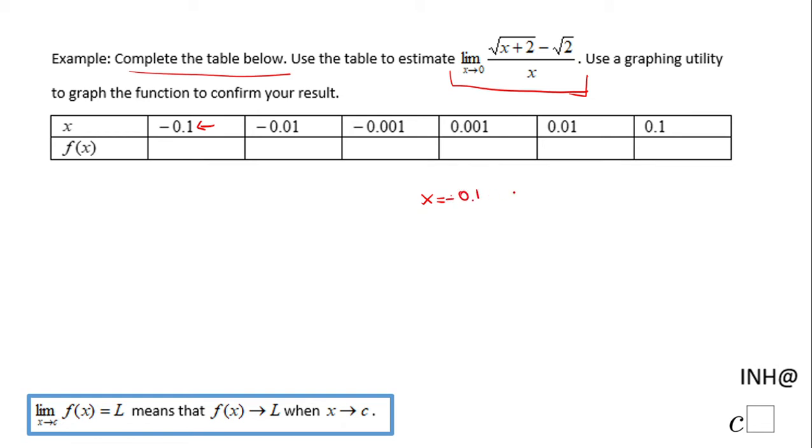I'm going to plug in this function that goes with this limit and we're going to do f of negative 0.1. How are you going to do that?